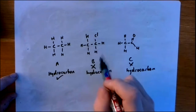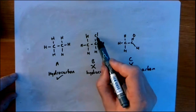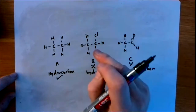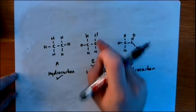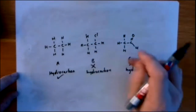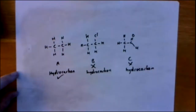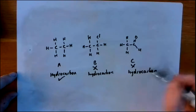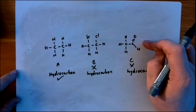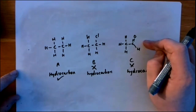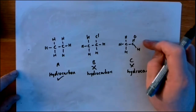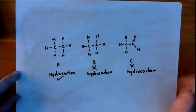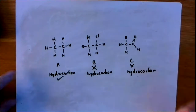B has two atoms of carbon and five atoms of hydrogen, but it's got an atom of chlorine bonded to it. So B is not a hydrocarbon because it contains carbon and hydrogen but also has chlorine. The last compound C has two atoms of carbon and four atoms of hydrogen, but it also has one atom of oxygen — so it cannot be a hydrocarbon. We will study these in organic chemistry, but they are not called hydrocarbons.